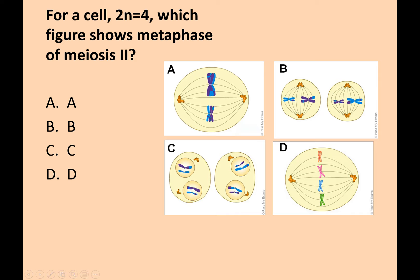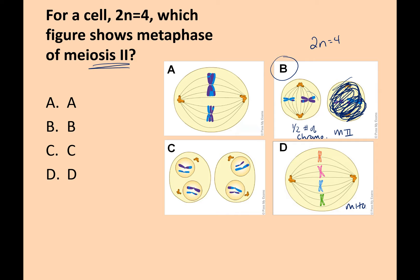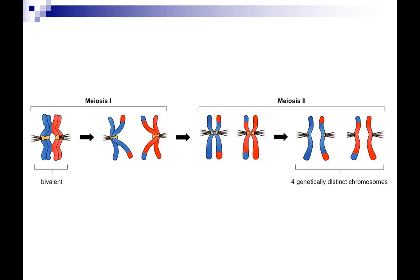Which is metaphase for meiosis II? That answer is B. Because you have half the number of chromosomes originally, since you've done one split. I may only show you one cell, so if I say 2N equals 4, the way you know this is meiosis II versus mitosis is it has half the amount of chromosomes. So 2N equals 4: you're going to have four chromosomes in mitosis, but two chromosomes and four chromatids in meiosis II.